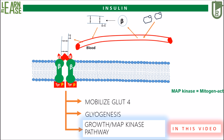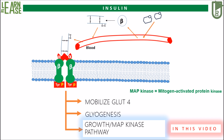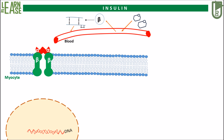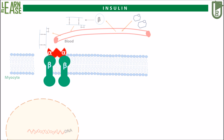Mitogen activated protein kinase is abbreviated as MAP. In the animation, a target cell is shown and its nucleus is represented at the bottom left. Insulin will bind to the alpha subunit of the receptor and cause its activation. Here, the detailed mechanism of receptor activation is shown.